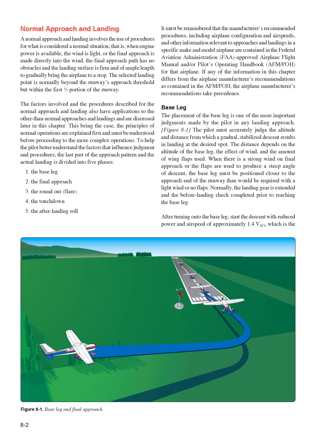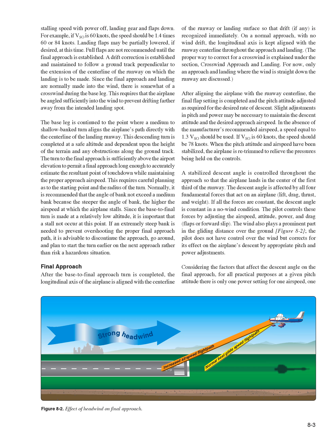Base Leg. The placement of the base leg is one of the more important judgments made by the pilot in any landing approach. The pilot must accurately judge the altitude and distance from which a gradual, stabilized descent results in landing at the desired spot. The distance depends on the altitude of the base leg, the effect of wind, and the amount of wing flaps used. When there is a strong wind on final approach or flaps are used to produce a steep angle of descent, the base leg must be positioned closer to the approach end of the runway.